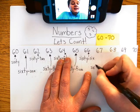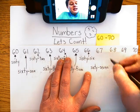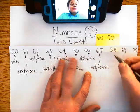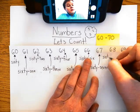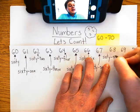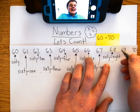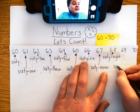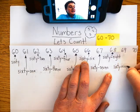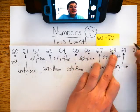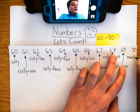67 — s, i, x, t, y, dash, s, e, v, e, n. 68 — s, i, x, t, y, dash, e, i, g, h, t. 69 — s, i, x, t, y, dash, n, i, n, e. 70 — s, e, v, e, n, t, y.